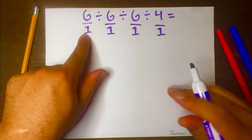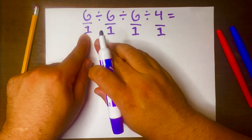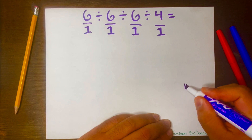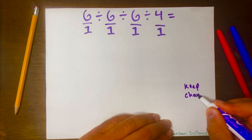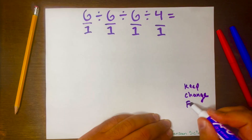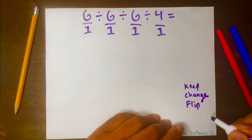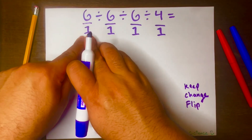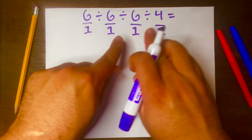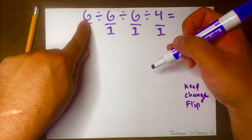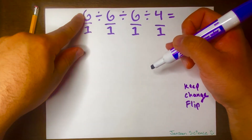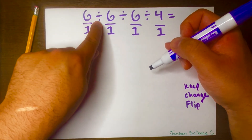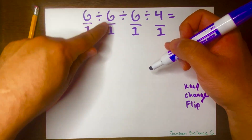Next, we're going to start working using the keep-change-flip method, working towards the right. So we start from the left and keep going towards the right. The first thing we'll do is look at the first part, which is 6 over 1, divided by 6 over 1.